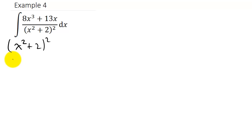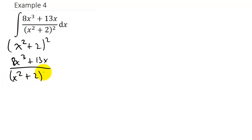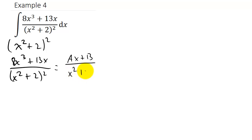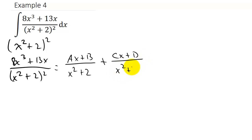So I have 8x cubed plus 13x over x squared plus 2 squared is equal to... Notice that this is a quadratic, so that's going to be ax plus b over x squared plus 2. And since this is squared, I've got to do it again: plus cx plus d over x squared plus 2, all of that squared.